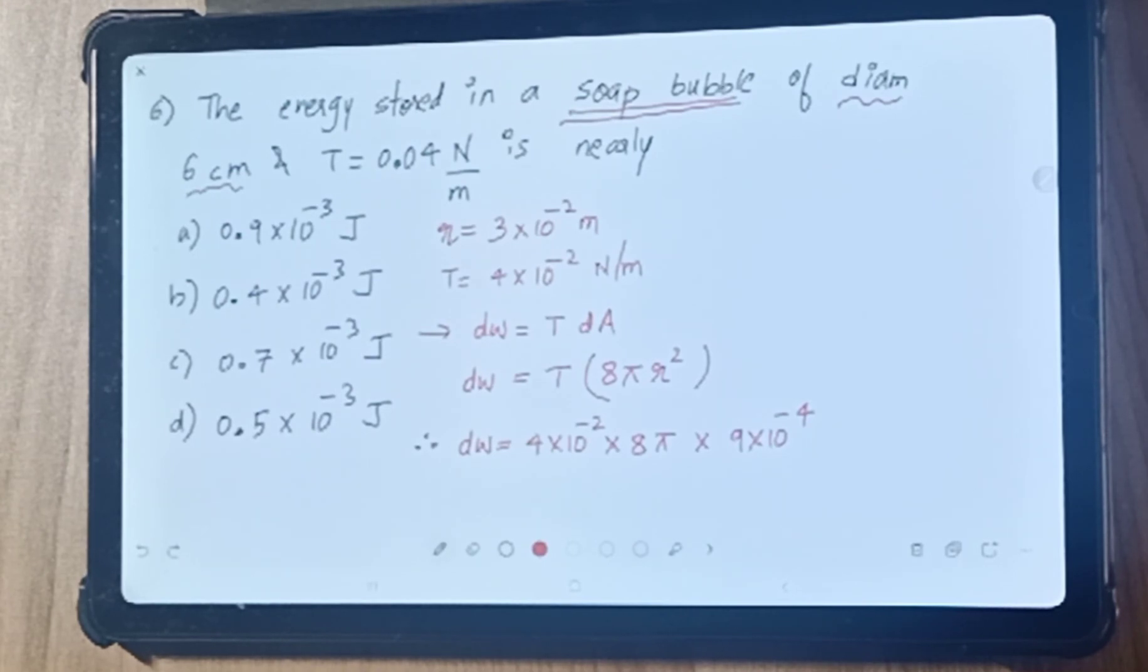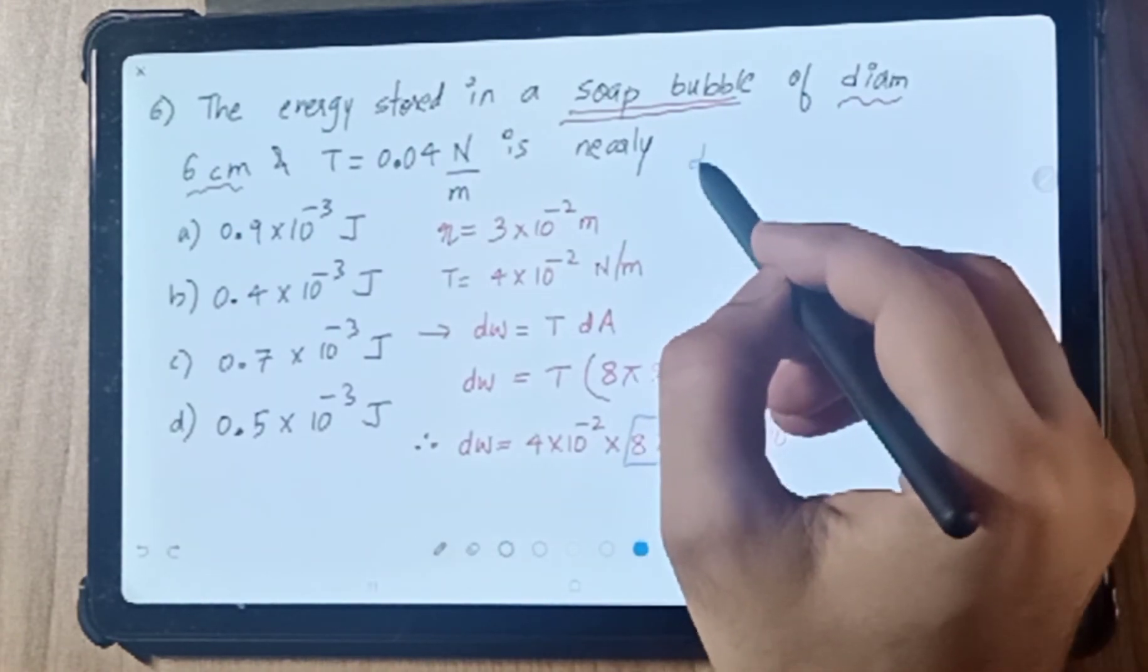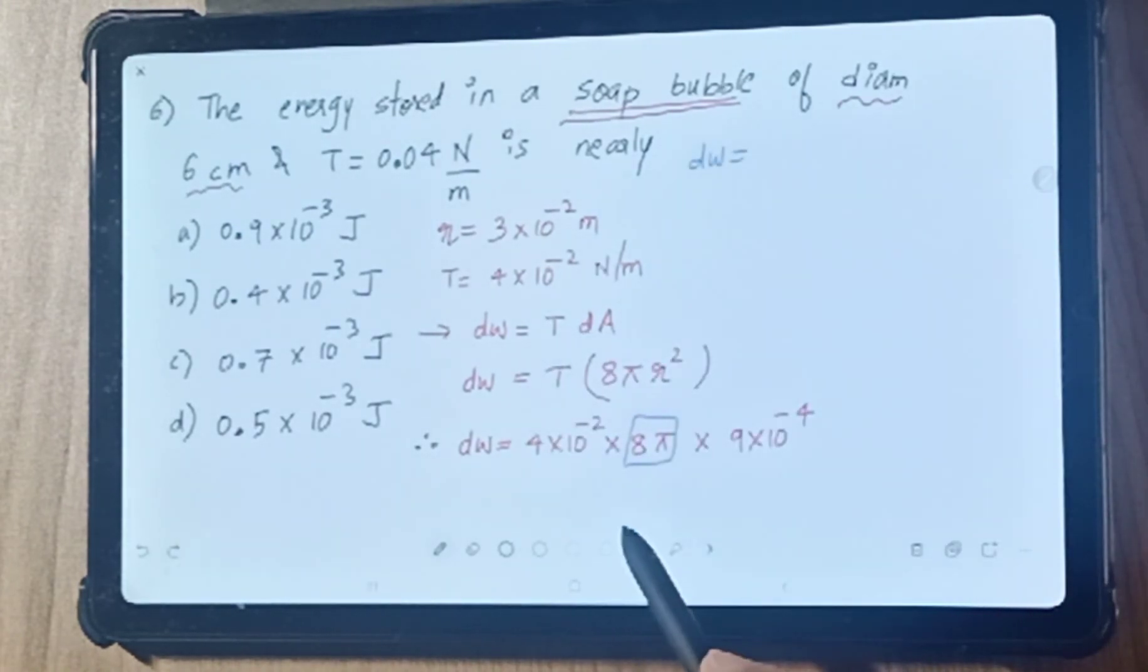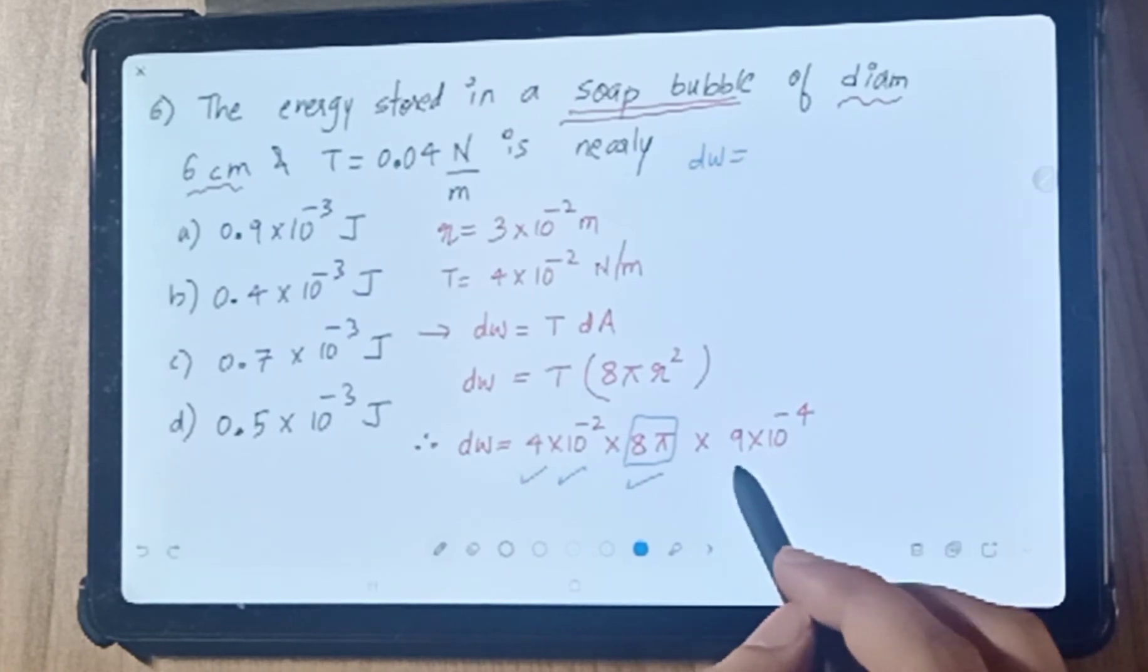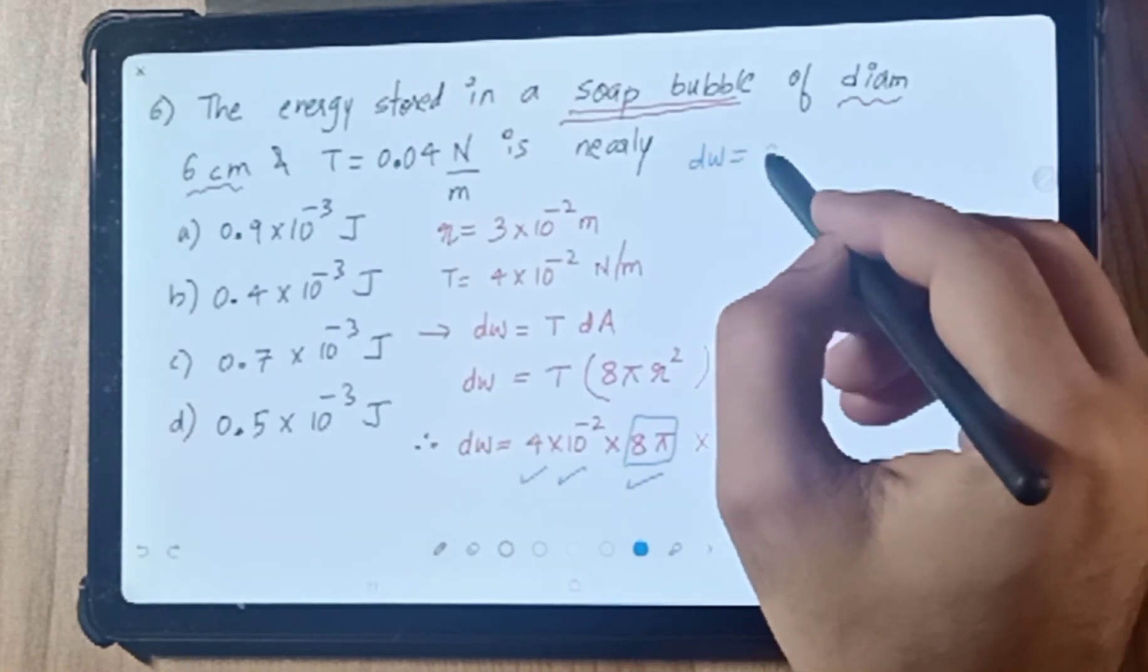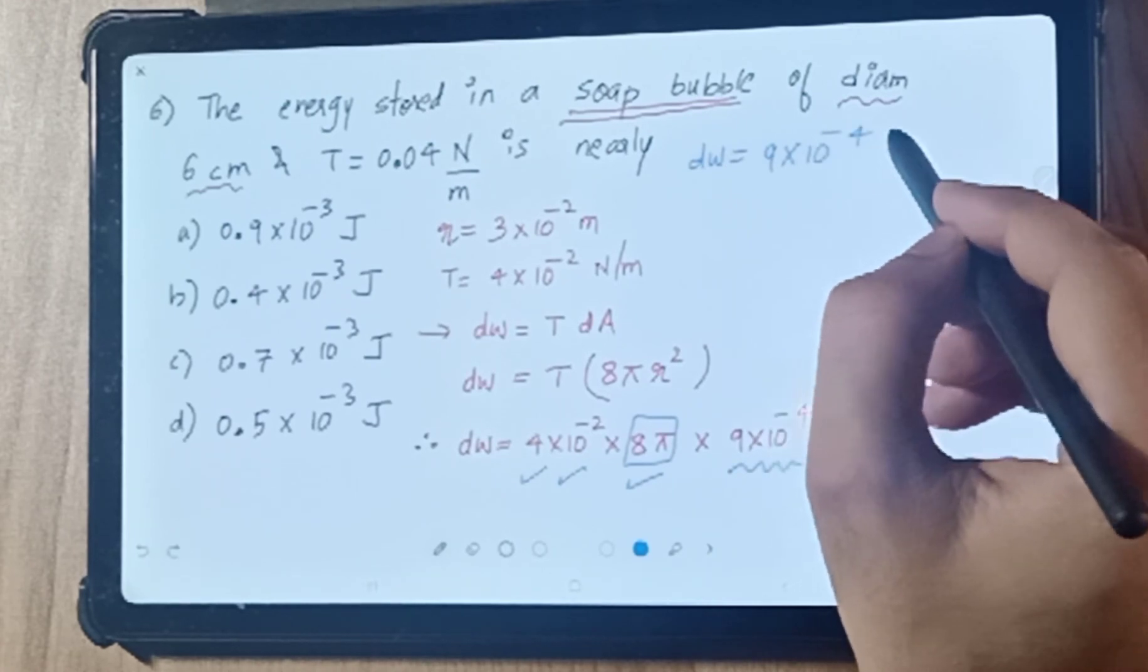Students, you need to do approximation anyway as they mentioned. So why don't we consider 8π as approximately 25. Then DW becomes: 25 × 4 = 100, which means 10². This 10² and 10⁻² cancel out, so you get DW = 9 × 10⁻⁴ joule.